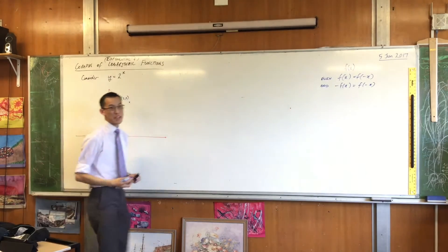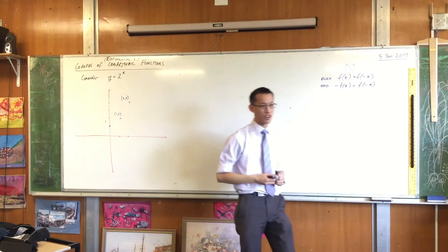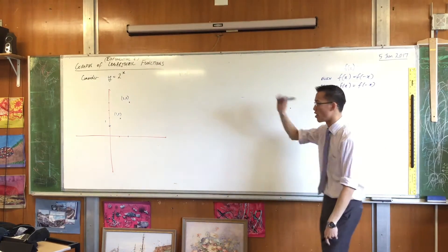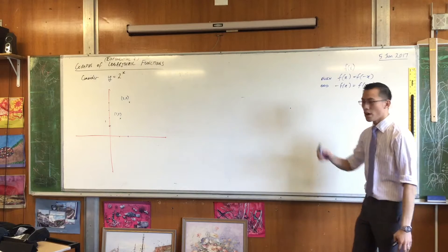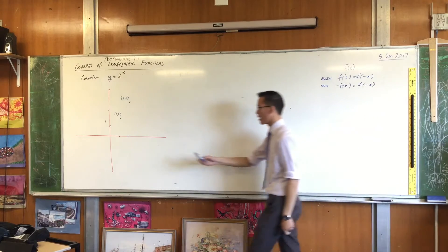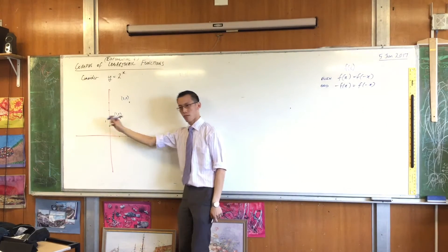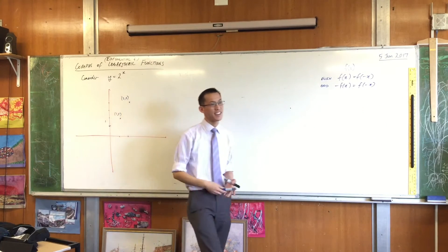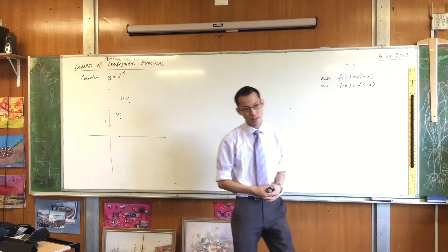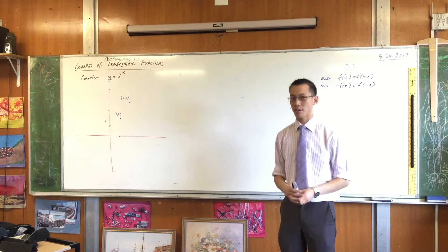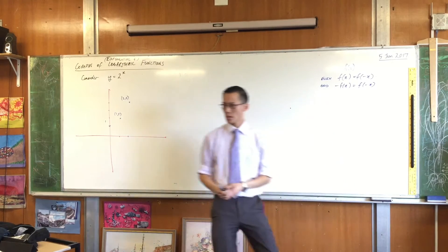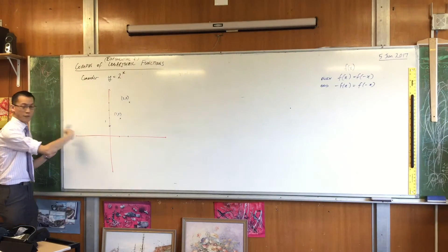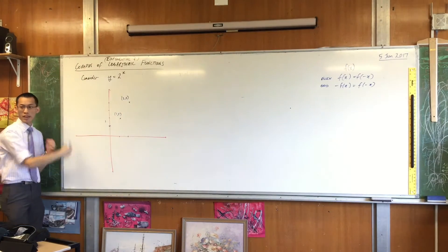I don't have space for the next one: at x equals 3, y equals 8 — it's already off my graph. So that's what's happening to the right. What's happening to the left? If I put in negative values for x, what's happening to 2 to the x? It's getting smaller and smaller and smaller the further we go over here.